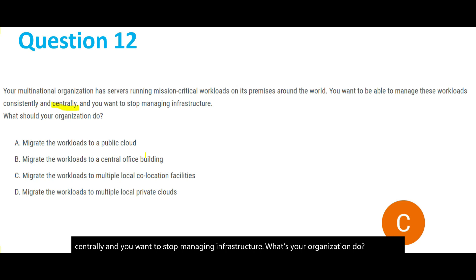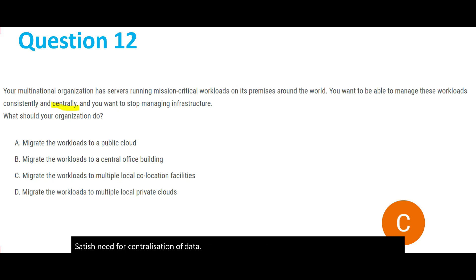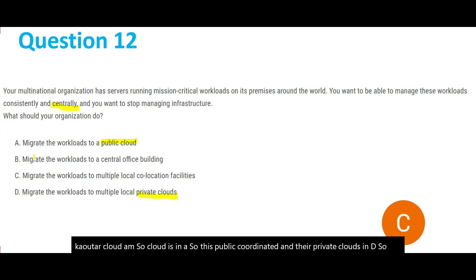There is a need for centralization of data, and whenever there is a need for centralization of data, the cloud is always the answer. Cloud is in option A as public cloud, and there is private cloud in D. Option B, migrate the workloads to a central office building, is not the answer because you need to manage infrastructure there and it is not cloud.